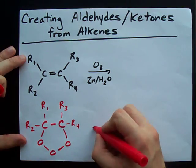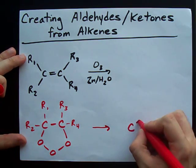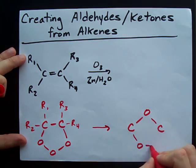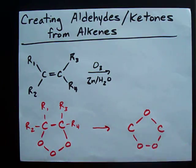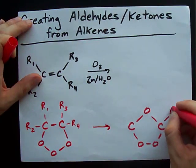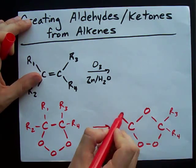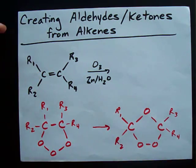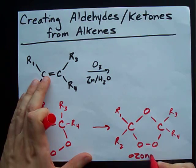This rearranges itself. You end up with the two carbons separated by an oxygen, and these two oxygens are down here. See how we've rearranged the pentagon so the oxygens are kind of separate from each other? You still have R3 and R4 on this carbon, and R1 and R2 on this carbon.